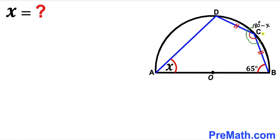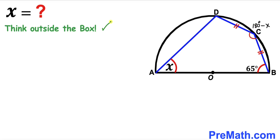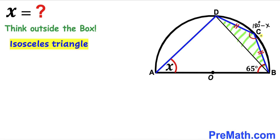Now we are going to think outside the box and connect vertices B and D. Let's focus on triangle BCD. We can see this triangle is isosceles since side CD equals side BC. Since the triangle is isosceles, the base angles must be congruent. If I call one base angle alpha, the other must be alpha as well.